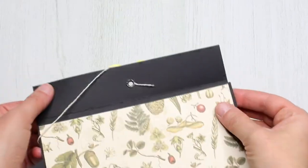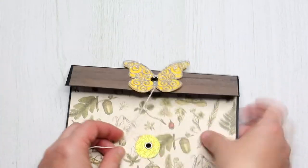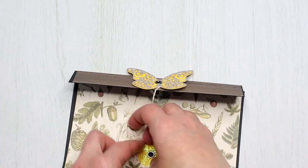If you want to add a magnet instead that would be fine too. You can just glue the magnets after gluing the pockets inside the folder.